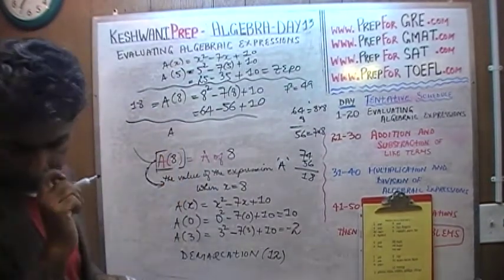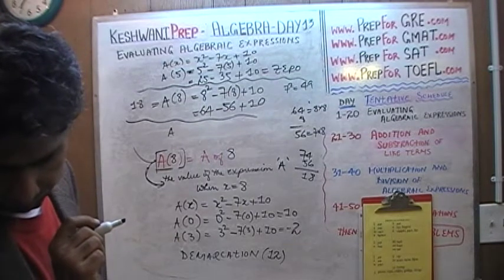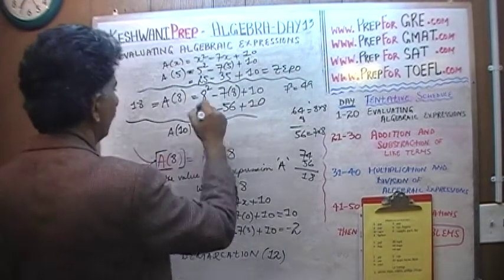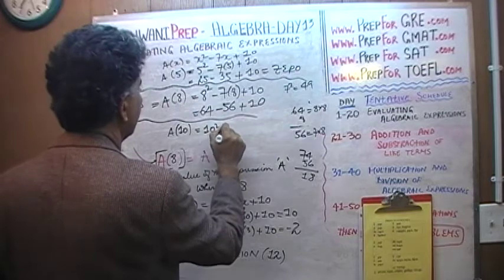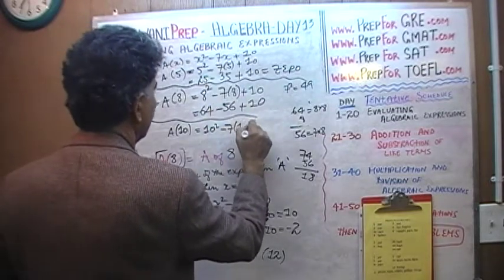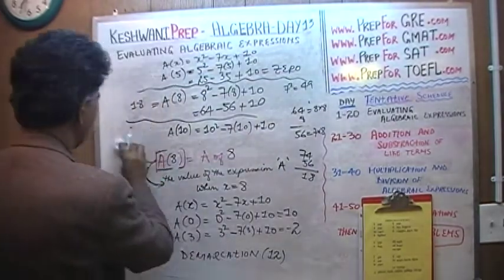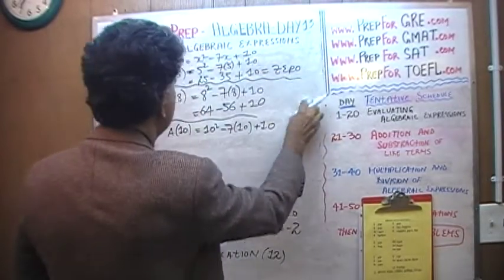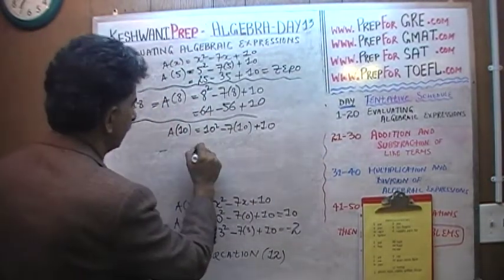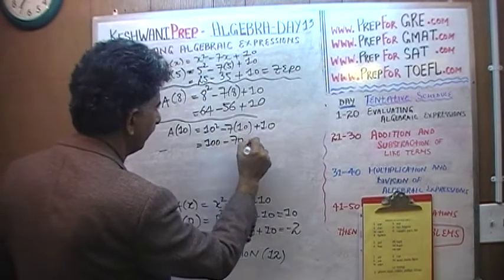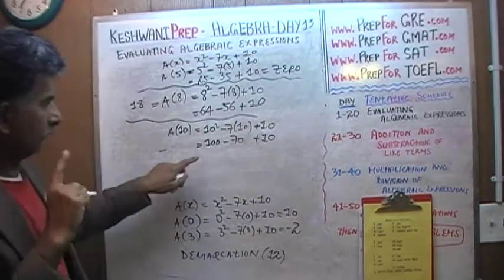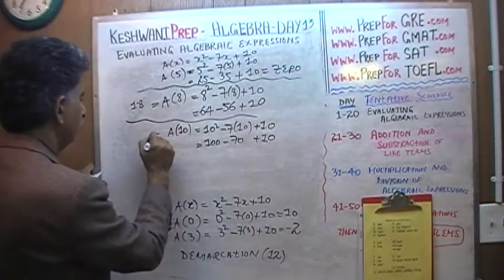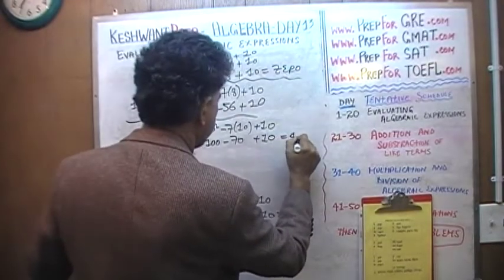Let's do the last one: A(10). We replace x with 10: 10 squared minus 7 times 10 plus 10. 10 squared is 100, minus 70, plus 10. 100 minus 70 is 30, and 30 plus 10 is 40. So A(10) equals 40. That's it — we are done.